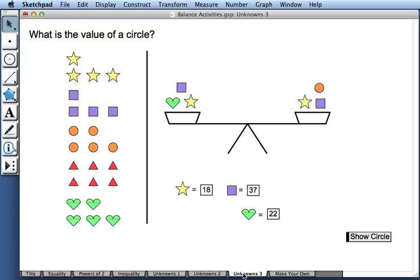In our next unknowns activity, we're asked to find the value of different shapes. In this case, we're asked to find the value of a circle. So notice that we have some shapes that are common to both sides. For instance, there's a square on both sides.